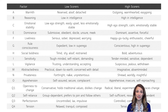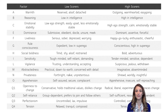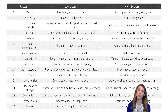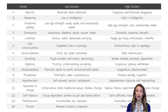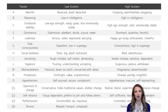Cattell identified 16 traits, which you can see in this table. You have the label on the left, the factor letter, and the title. Factor A was known as the warmth dimension. In the middle column are characteristics that a low scorer might exhibit, and in the right-hand column are characteristics that a high scorer might exhibit.